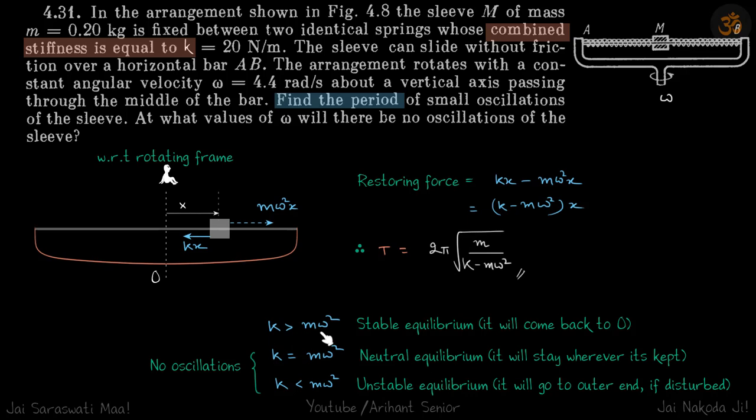In which case the particle will undergo SHM. In the other two cases, there will be no oscillations. When k equals mω², neutral equilibrium - it will stay wherever it's kept. If k is less than mω², then it's unstable equilibrium, so if disturbed it will just go to the other end.